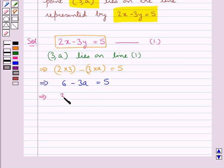That is 3A is equal to 6 minus 5, or you can say 3A is equal to 1. Now dividing both sides by 3 we get 3A upon 3 is equal to 1 upon 3.